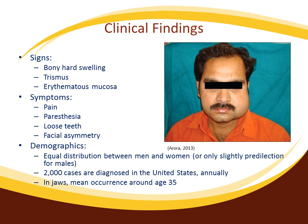Clinical symptoms including pain, paresthesia, loose teeth, ill-fitting dentures, and facial asymmetry have all been reported. It can also cause epistaxis, nasal obstruction, and possibly blindness. The distribution of osteosarcoma is considered to have equal distribution between sexes, though some studies suggest it is more common in men than women.